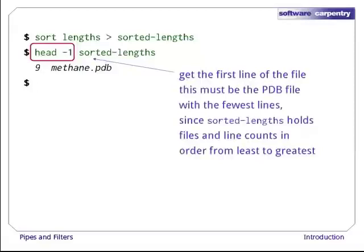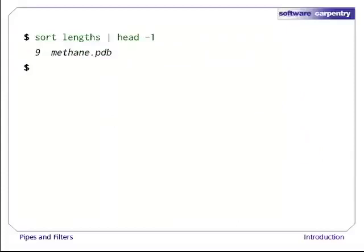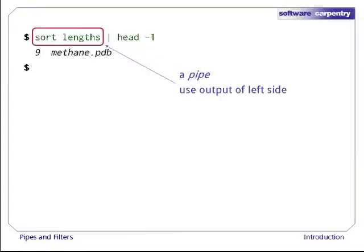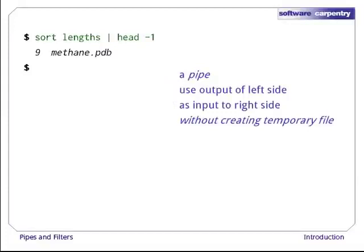This must be the file with the fewest lines, since sorted_lengths holds files and their line counts in order from the least to the most. If you think this is confusing, you're in good company. Even once you understand what wc, sort, and head do, all those intermediate files make it hard to follow what's going on. Let's start by getting rid of the sorted_lengths file by running the sort and head commands together. That vertical bar between them is called a pipe. It tells the shell that we want to take the output of the command on the left and use it as the input to the command on the right without explicitly creating a temporary file.